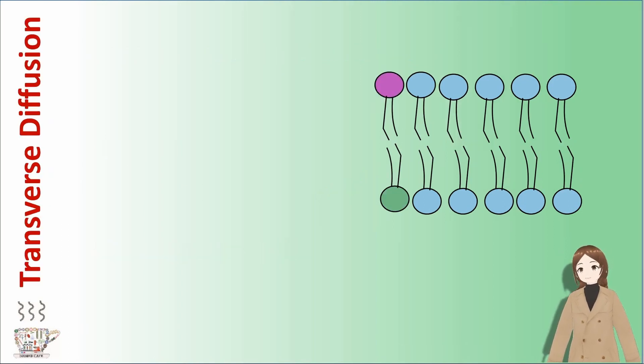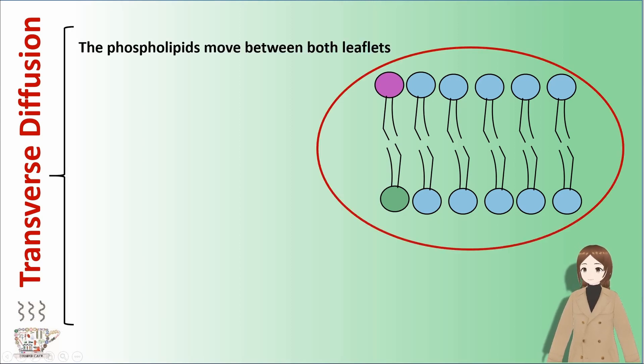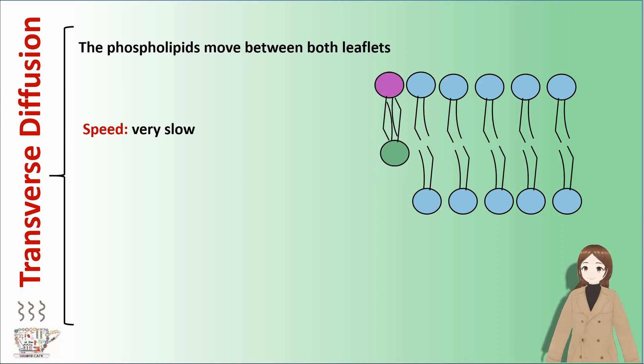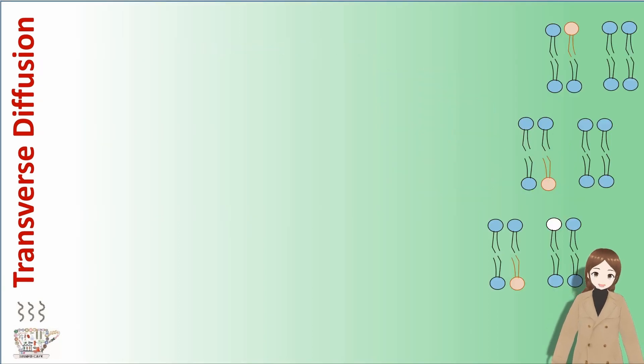The fourth movement is transverse diffusion. In this movement, the phospholipids move between both leaflets. The speed of this movement is very slow and it's rare. It's called flip-flop, too, and it allows the membrane asymmetry to be maintained. There are three enzymes that catalyze phospholipid movement in transverse diffusion.